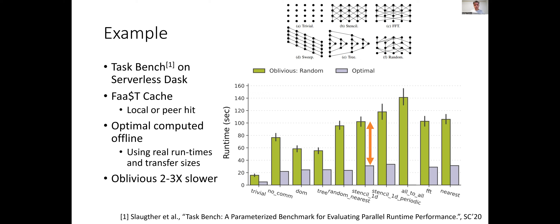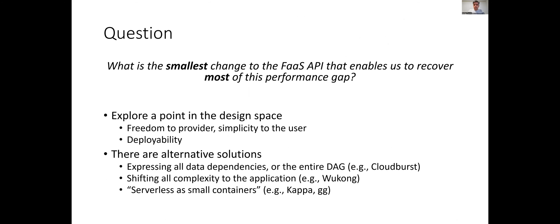We then set up the following question: what is the smallest change we can make to the function-as-a-service API — the simplest one, not one that has DAGs or anything — that enables us to recover most of this performance gap? Can we change the interface a bit and recover most of the performance we lose due to lack of locality? We still want to provide the same freedom to the provider and maintain simplicity to the user — maintaining the serverless nature of the platform — and we strived to look at something easily deployable.